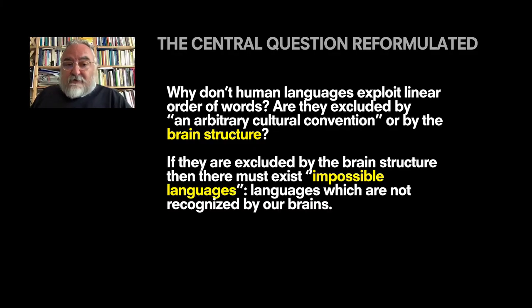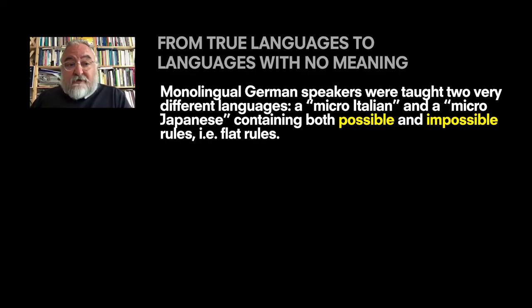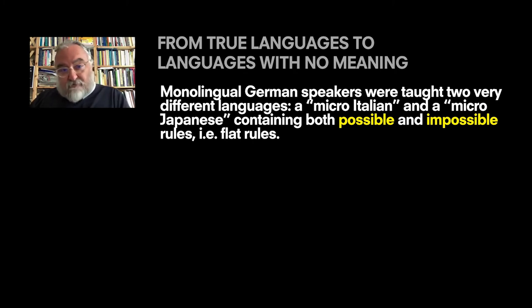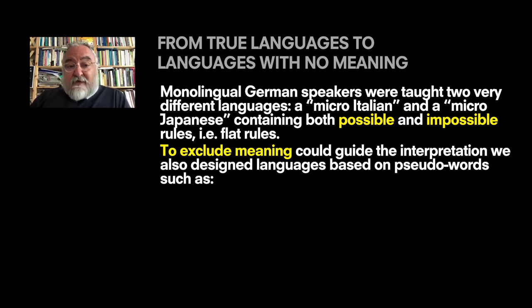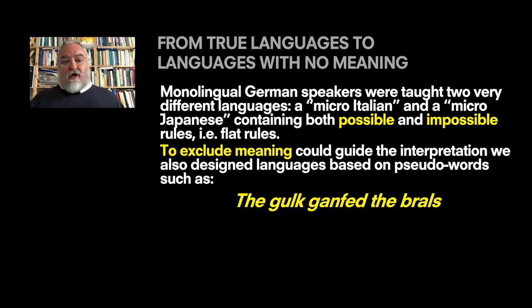There is a way. If they are excluded by brain structure, then there must exist impossible languages — namely, languages which are not recognized by our brain. And this is exactly what I did with two different groups of scientists in two different experiments. In the first one, I taught a monolingual German speaker two very different languages — a micro-Italian and a micro-Japanese — containing both possible and impossible rules, that is, flat rules. In the second experiment, to exclude that meaning could guide interpretation, we also designed languages based on pseudowords, such as 'the gulfed brawls' for Italian speakers — no meaning at all, but it sounds like a sentence.